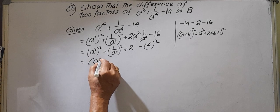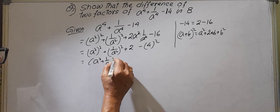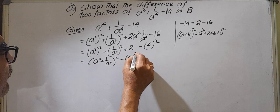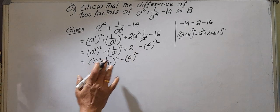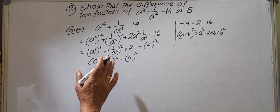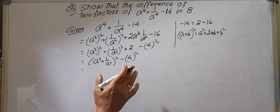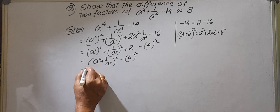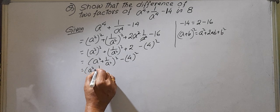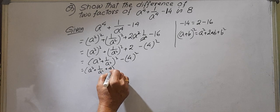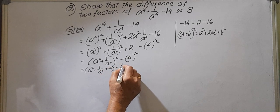Now it is A plus B whole square. So A square plus 1 by A square whole square minus 4 whole square, simply. So A plus B into A minus B. For this, when I do the A plus B into A minus B, then I will get the two different factors.